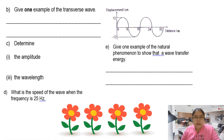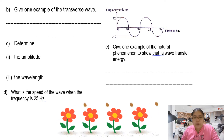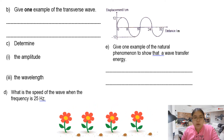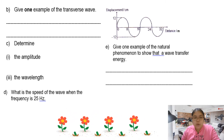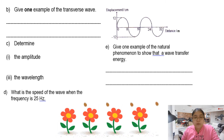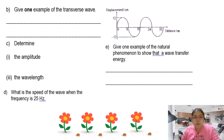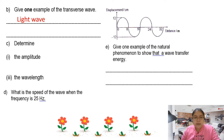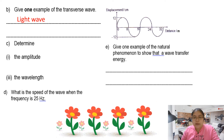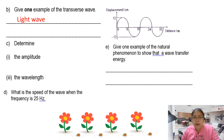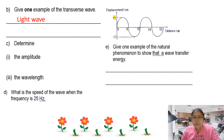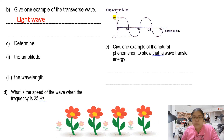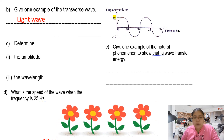Part B — give one example of a transverse wave. Transverse wave, we have two from our syllabus: water wave and also light wave. So we just mention one. Then determine the amplitude. The amplitude is the maximum displacement from the equilibrium position. So that is 12 cm.